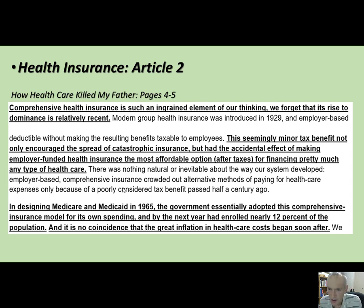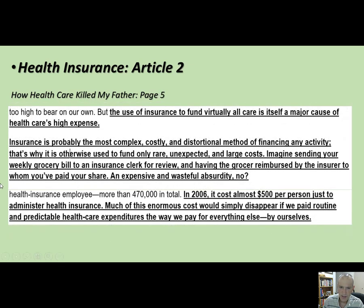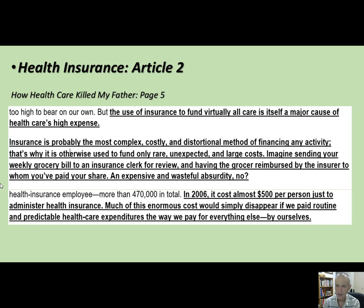What if we did not allow employer-provided health insurance to have such incredibly beneficial tax treatment? Medicare and Medicaid followed that same model and made it comprehensive—and we've seen huge inflation in healthcare because of it. He says insurance is a complex, costly, distortional method for financing any activity. One of the problems in the rubric is the inefficiency of the insurance model. Insurance hires actuaries, underwriters—it's an extremely expensive business. You really want to limit it to low frequency events so you don't have to use it all that often.